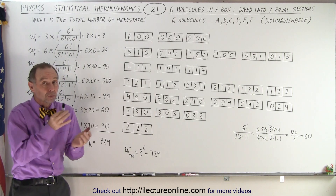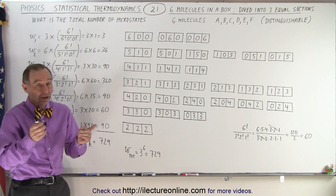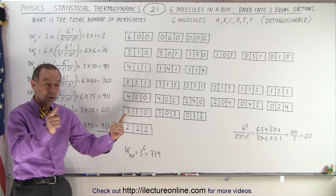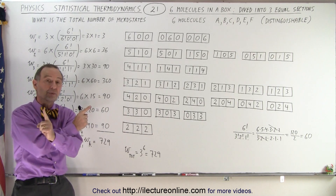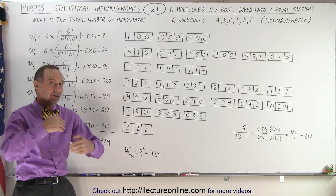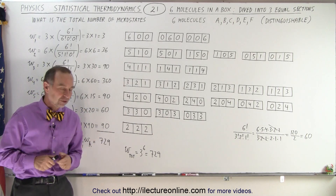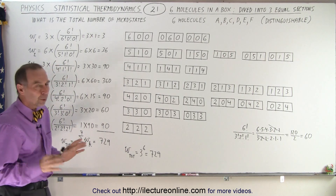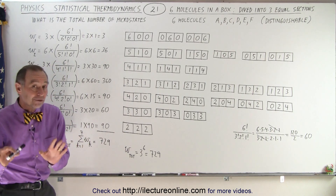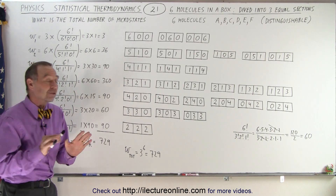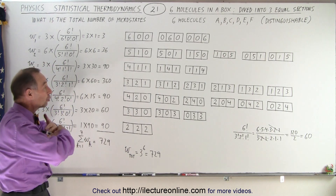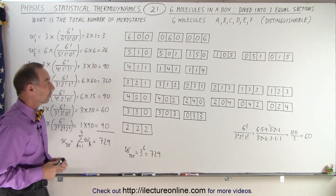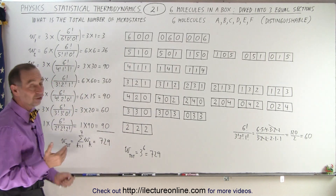So that means that when we have one molecule here and one molecule there, and we change places, that's a different microstate. So what does that look like? We already got some flavor of that in the previous video, but now we want to show all of the various microstates.